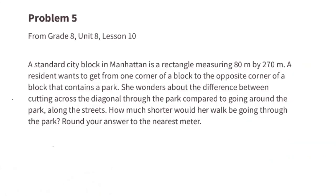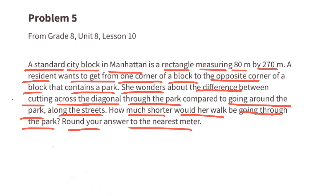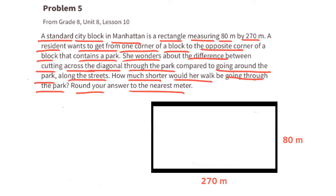Problem number five from eighth grade Unit 8 Lesson 10: a standard city block in Manhattan is a rectangle measuring 80 meters by 270 meters. A resident wants to get from one corner of a block to the opposite corner through a park. She wonders about the difference between cutting across the diagonal through the park compared to going around along the streets. This diagonal forms a right triangle.